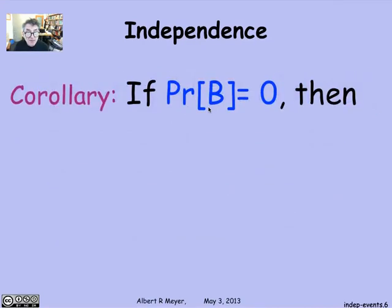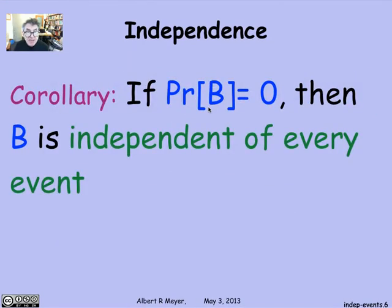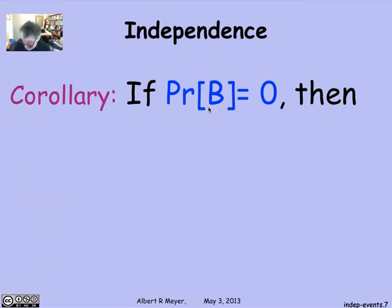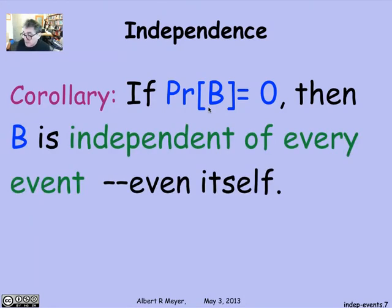Now another fact that holds is that if the probability of B happens to be zero, then vacuously B is independent of everything, even itself, which isn't important but is a small technicality that's worth remembering by that definition.